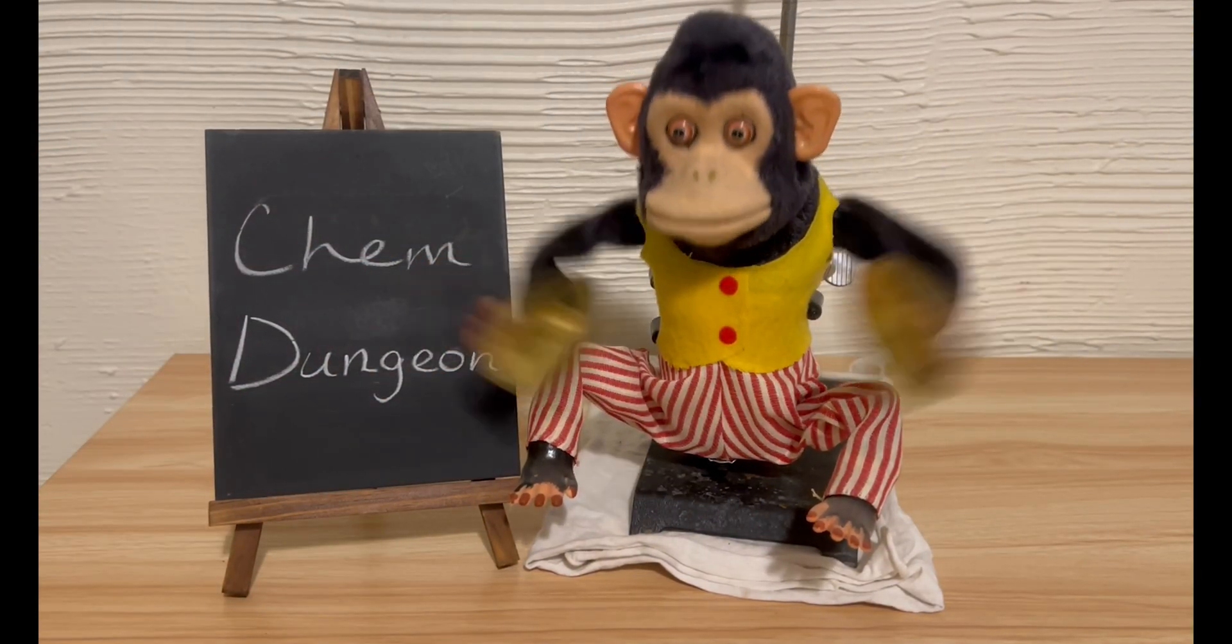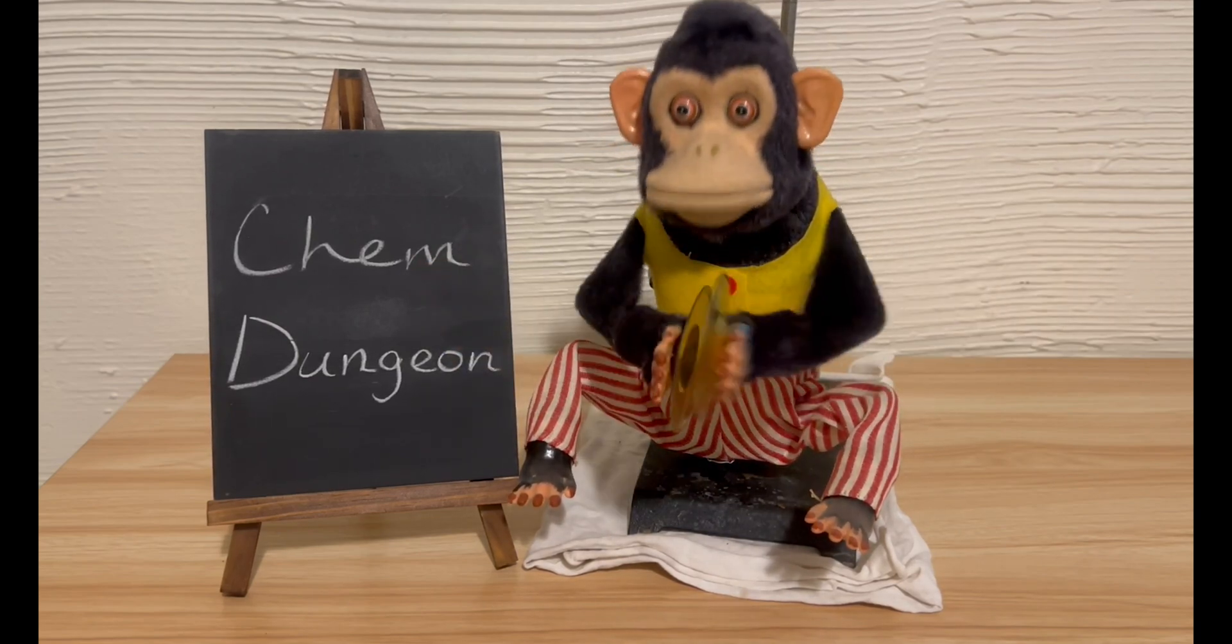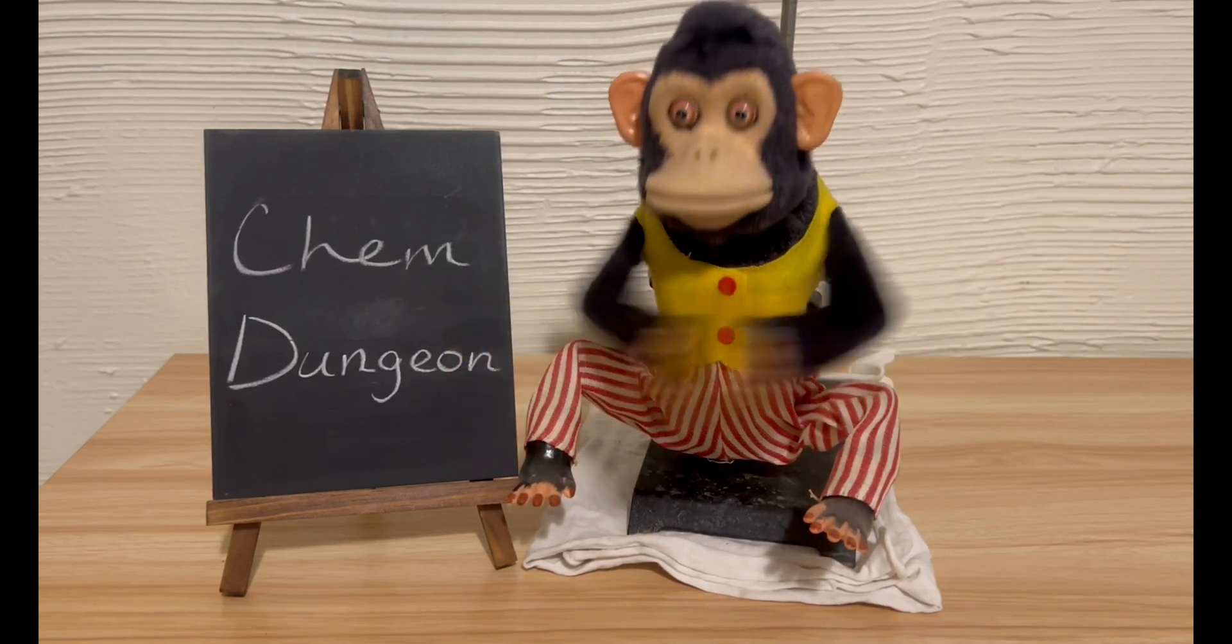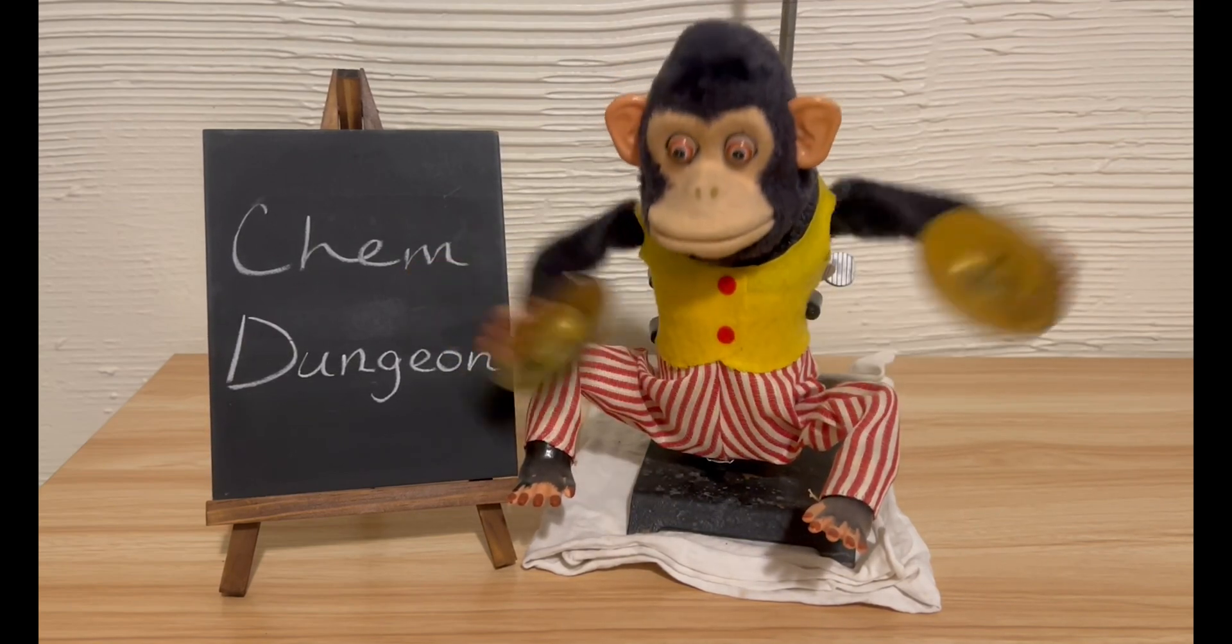The lead oxide is also useful for me because it's amphoteric, meaning it can react with both acids and bases, so I can readily prepare many lead compounds from it. Metallic lead is far less reactive and thus harder to make some compounds from directly.